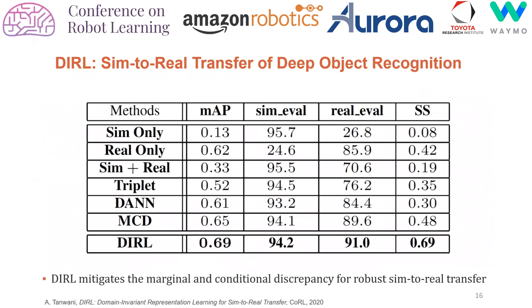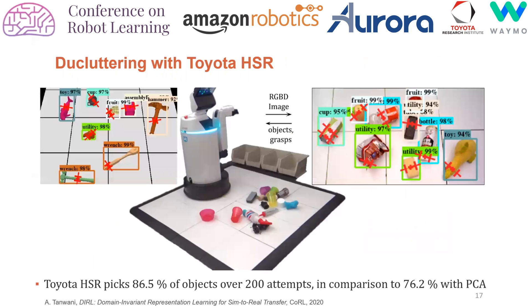Results for the deep object recognition network indicate that naive transfer of models from simulation results in poor performance with 26% accuracy. Triplet DAN and MCD improve performance in adapting to the real environment, while DOOL mitigates both the marginal and the conditional discrepancy for robot sim-to-real transfer, even outperforming the baseline of training on real data only.